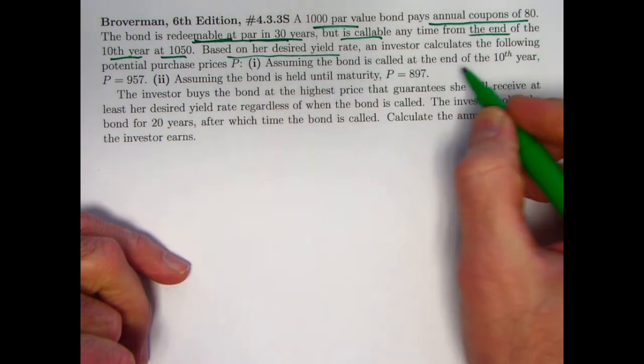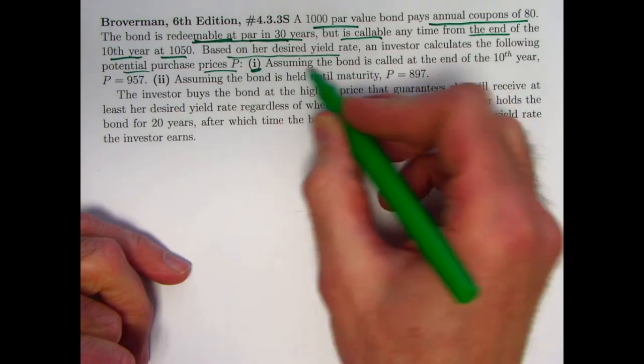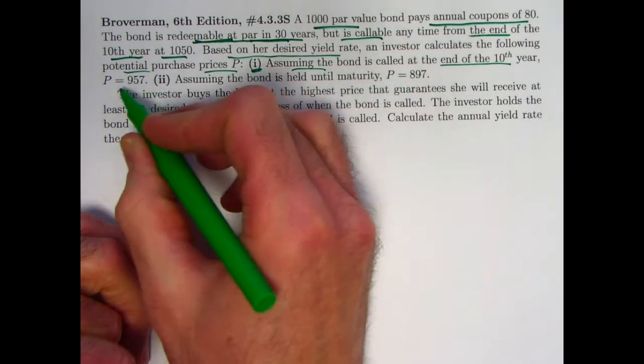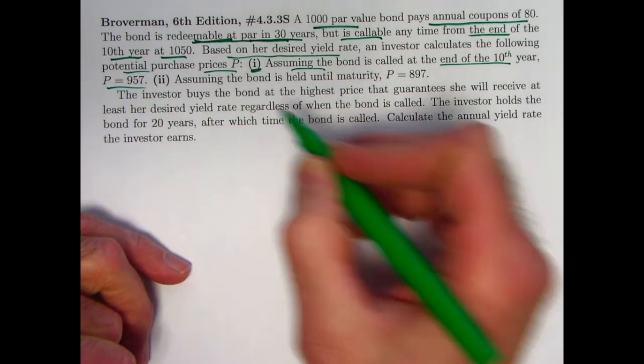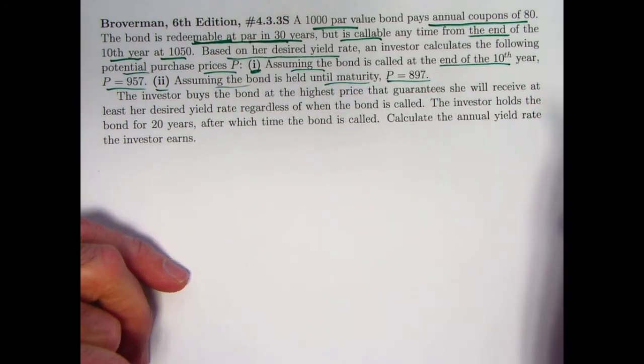Based on her desired yield rate, an investor calculates the following potential purchase prices P: (1) Assuming the bond is called at the end of the 10th year, the price will be $957. And (2) Assuming the bond is held until maturity, the price will be $897.